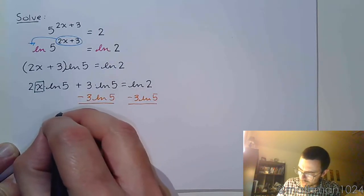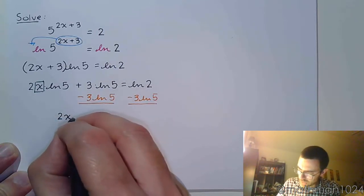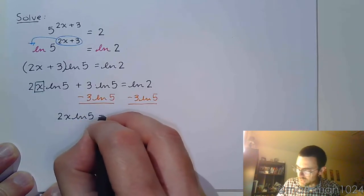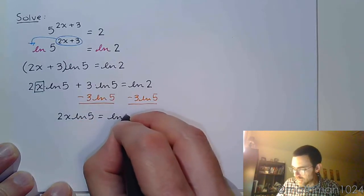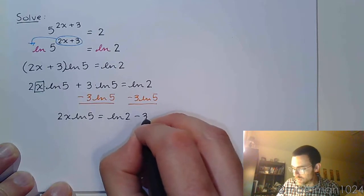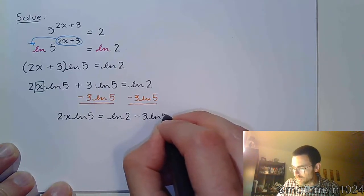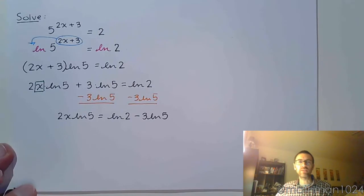And so now we have 2x natural log of 5 equals the natural log of 2 minus 3 natural log of 5.